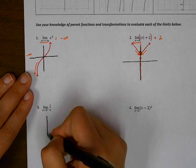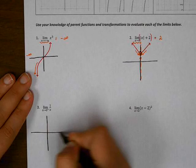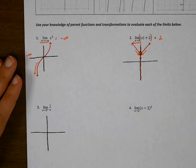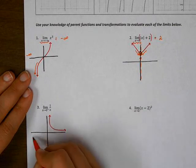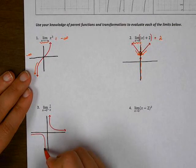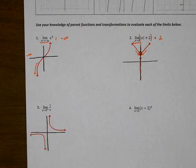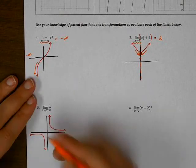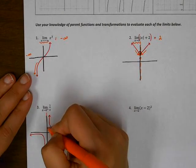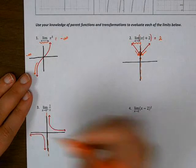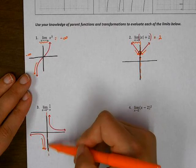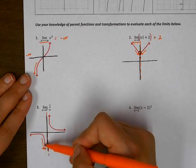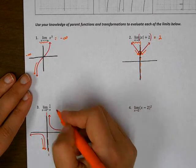For problem number three, I want to check the limit as x approaches zero from the left of one over x. Now one over x is a graph that looks like this. It has two parts because there's a vertical asymptote in the middle. If I want to check the limit as x approaches zero, which is where the asymptote is located, from the left side, which is this side, I can see that as I get closer to this line my y values are going down, which means they're negative infinity.